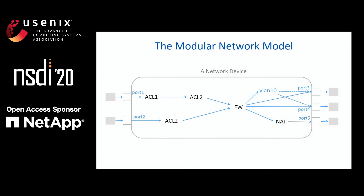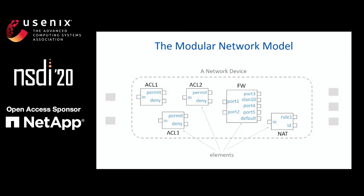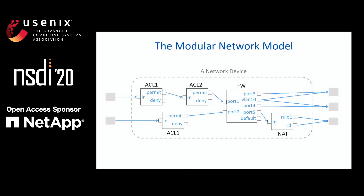A straightforward way is to model a device as a single box. However, we found this was not quite extensible. So we choose to decouple the device into a set of functions, where each function is modeled as an element. For example, here we have four elements: ACL1, ACL2, fw, and NAT. Each element has its own set of rules and also a set of ports, where a port represents a distinct action on packets. So when a packet comes to an element, it will be forwarded to exactly one port. An ACL element has a permit port and a deny port. The NAT element has a port for each translation rule and also a default identity port, which stands for no translation. By connecting the ports of elements, we can model the processing logic of this device.